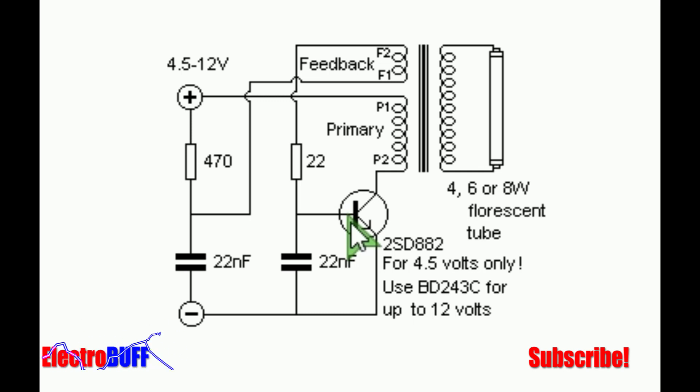So the primary and the feedback windings are connected as shown. If you wind all the windings in the same direction, P1 and P2 will be the primary terminals and F1 and F2 will be the feedback terminals.